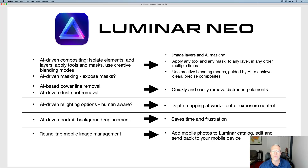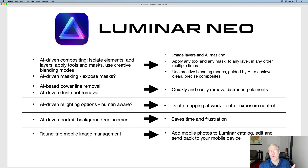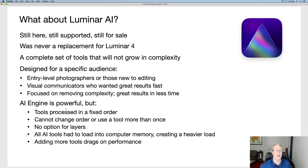There are also AI-driven relighting options. I'm guessing they're going to be human-aware, using depth mapping to give you better exposure control because they'll understand the depth in the image. There's also AI-driven portrait background replacement — replacing the background in a portrait automatically, which otherwise you'd have to go to Photoshop for, and that is not fun. And round-trip mobile image management looks pretty amazing — add your mobile photos to the Luminar catalog, edit them, and send them back to share on Instagram. Major time saver.